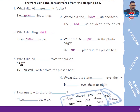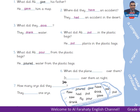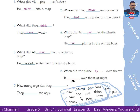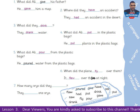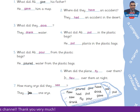Number 5: What did Ali pour from the plastic bags? He poured water from the plastic bags. Number 6: When did the plane fly over them? It flew over them at night — 'flew' is the simple past of 'fly'. Number 7: How many oryx did they see? They saw one oryx.